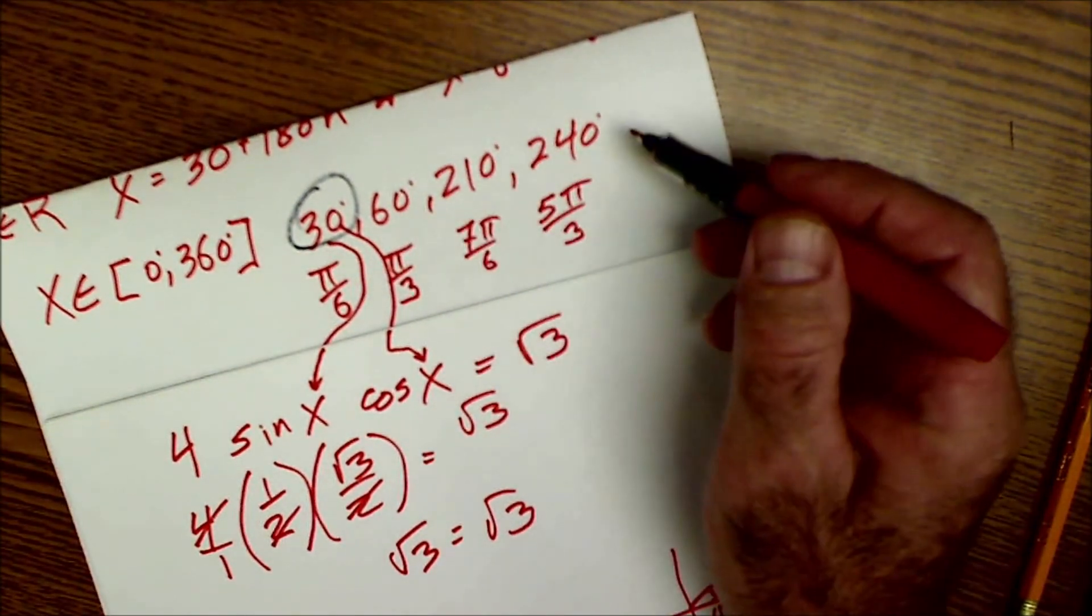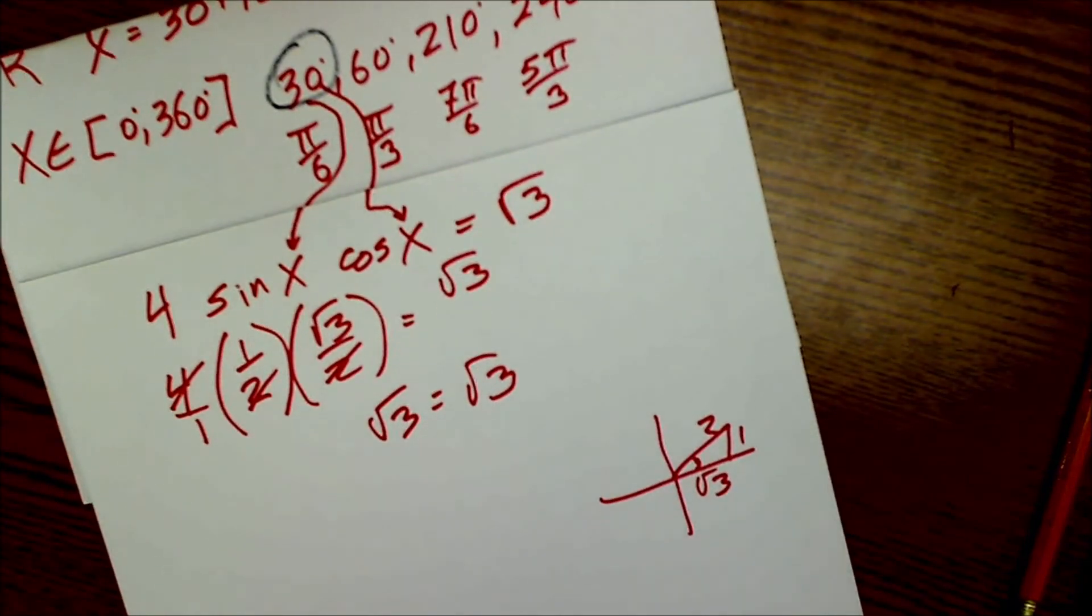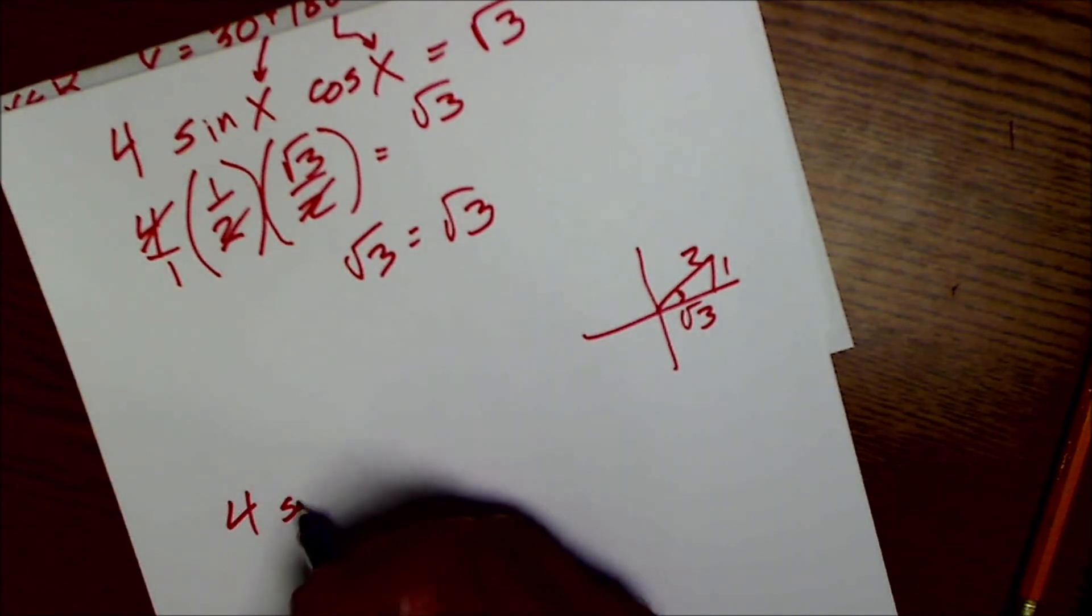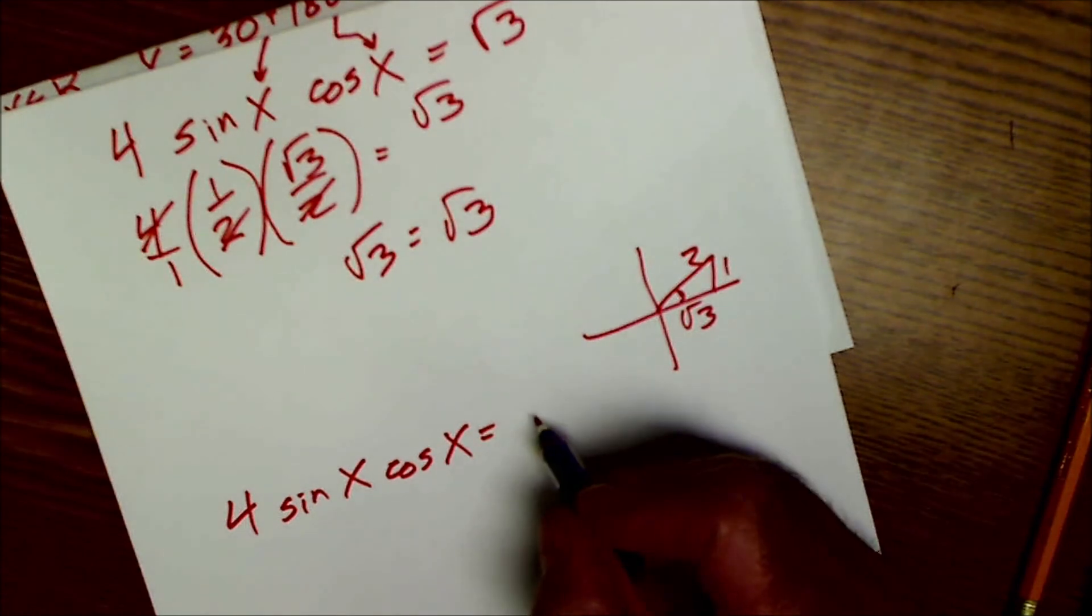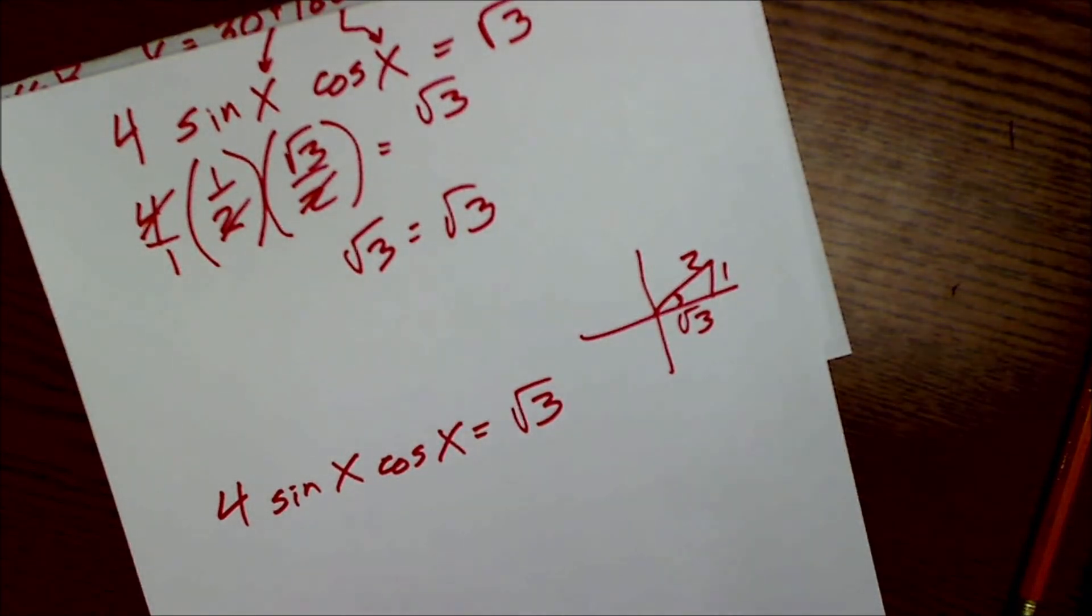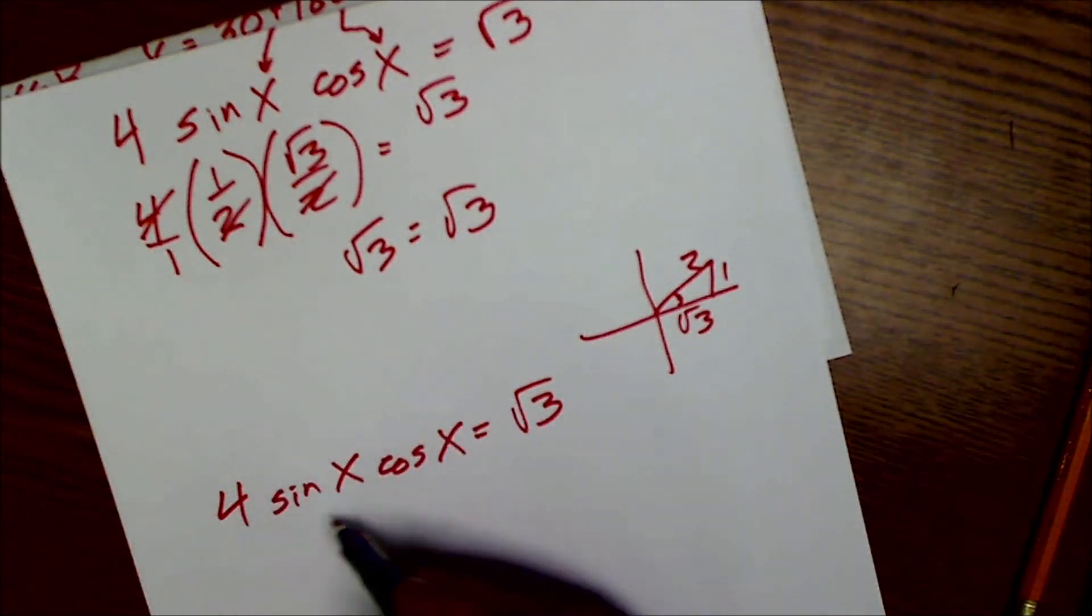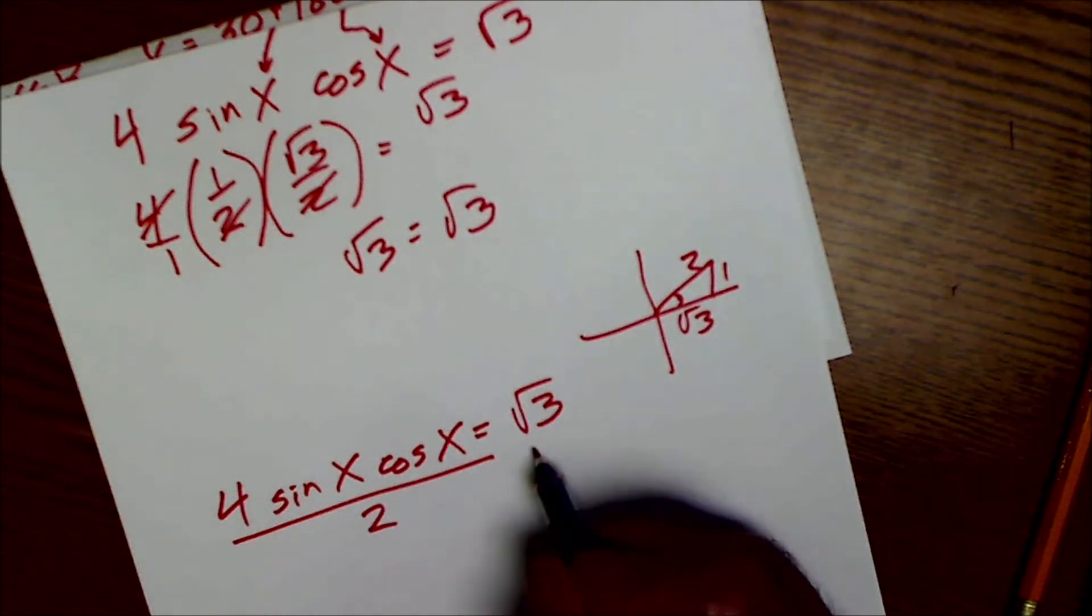I could take every one of these angles and plug it back in and see that they work. So hopefully that helps you solve the problem for sine of x, cosine of x, equals root 3. You use a double angle identity for this because this looks very similar to 2 sine of x cosine of x. And to get to that point, I divided both sides by 2.